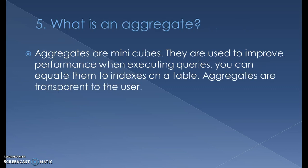What is an aggregate? Basically, an aggregate is a mini cube — a subset of a cube. For example, if a cube has 100 characteristics, 100 key figures, and one billion records, we can make a subset with fewer characteristics and less data that responds faster from a reporting perspective. Note that aggregates do not exist from SAP BW 7.5 onwards because it runs on HANA. They are used to improve query performance and are transparent to the end user.